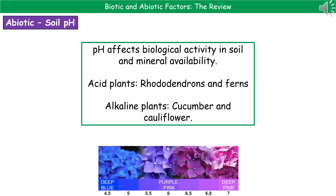The final abiotic factor is the pH of the soil. Soil pH is very important for growing plants because it affects two things: the biological activity in the soil, and the availability of minerals. Certain plants are adapted to grow in either acidic or alkaline conditions. Good examples of acid-soil plants are rhododendrons and ferns, whereas alkaline-adapted plants include cucumber and cauliflower.